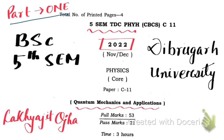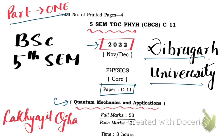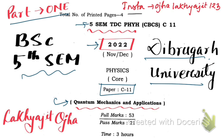Hello friends, this is part one of the question paper solution of Quantum Mechanics and Applications, paper C11 of de Bruijere University 2022 fifth semester BSc. Before we start, please subscribe to the channel, hit the thumbs up button, and share with your friends to inspire me to create new content. You can also follow me on Instagram: lakys_jit123.